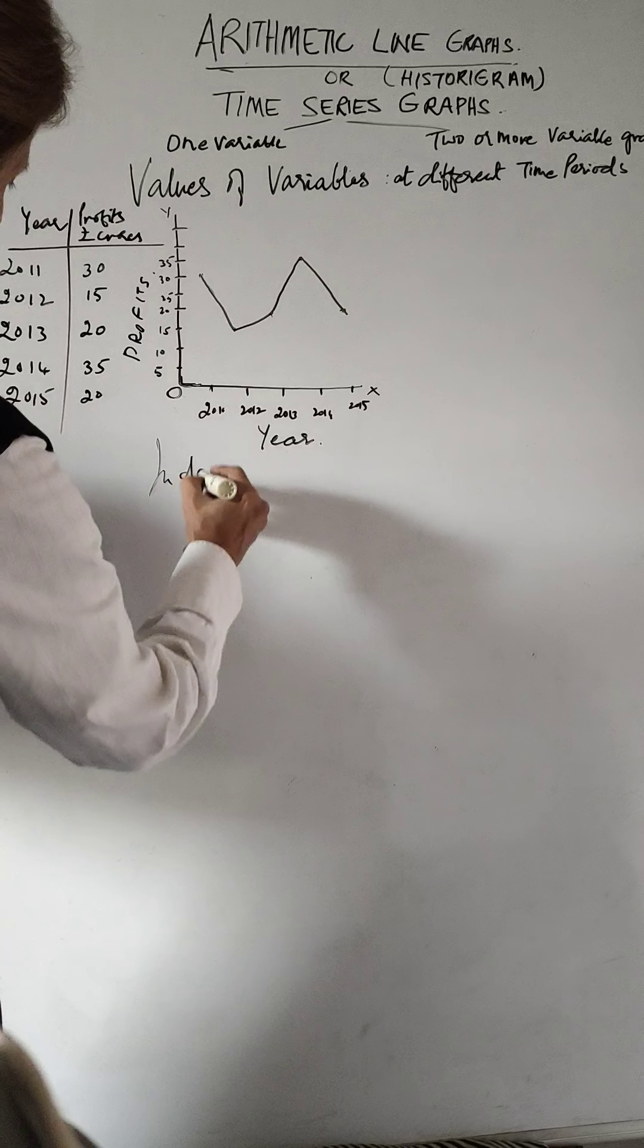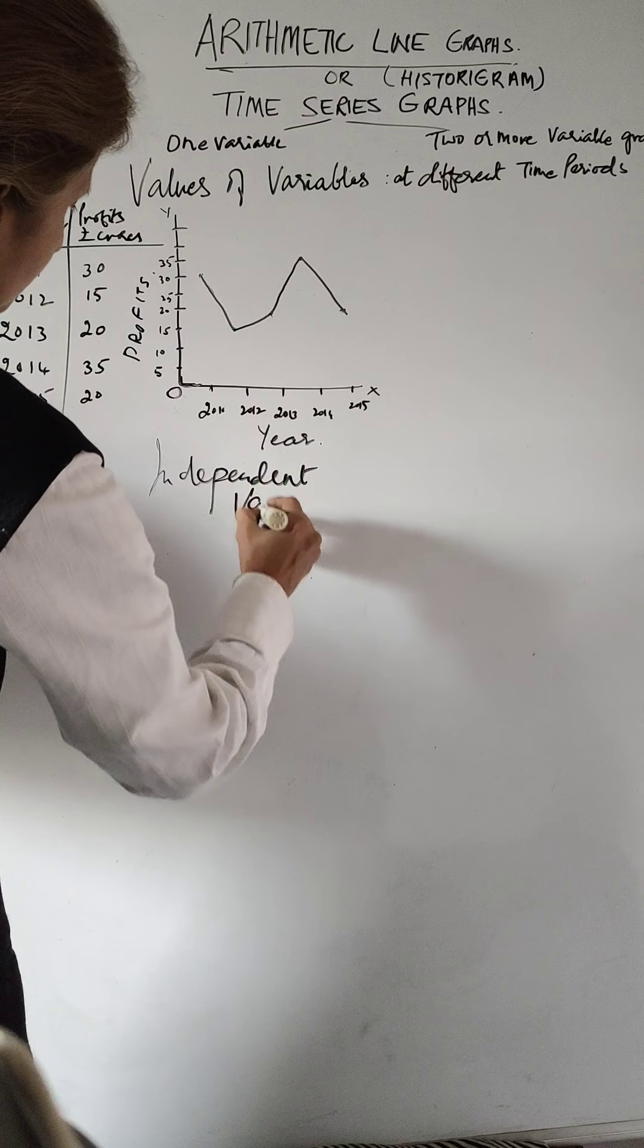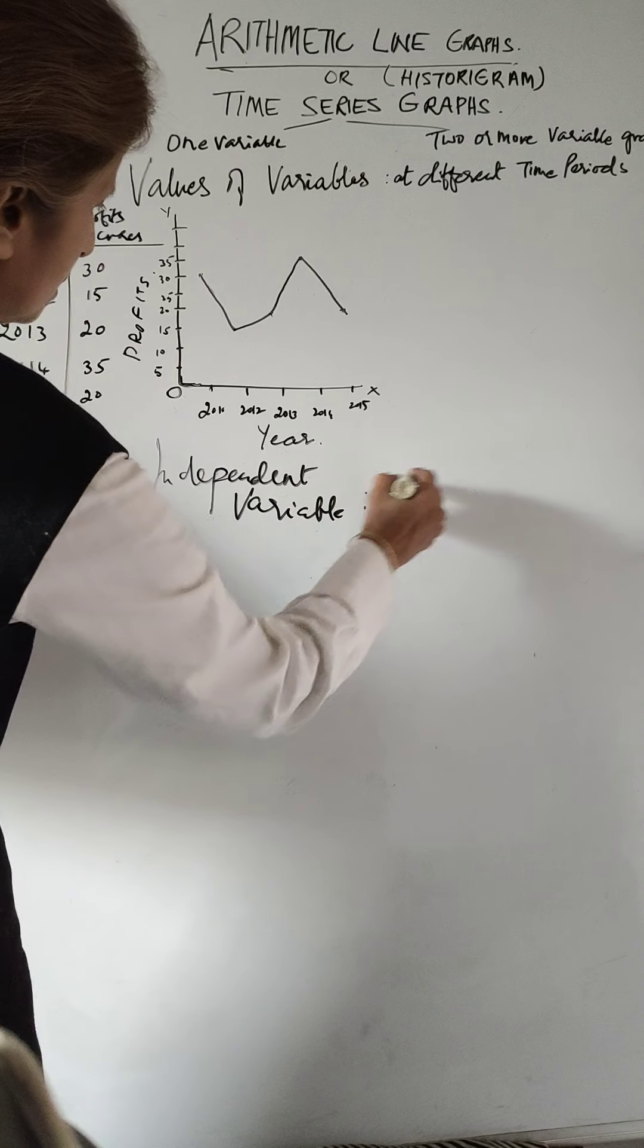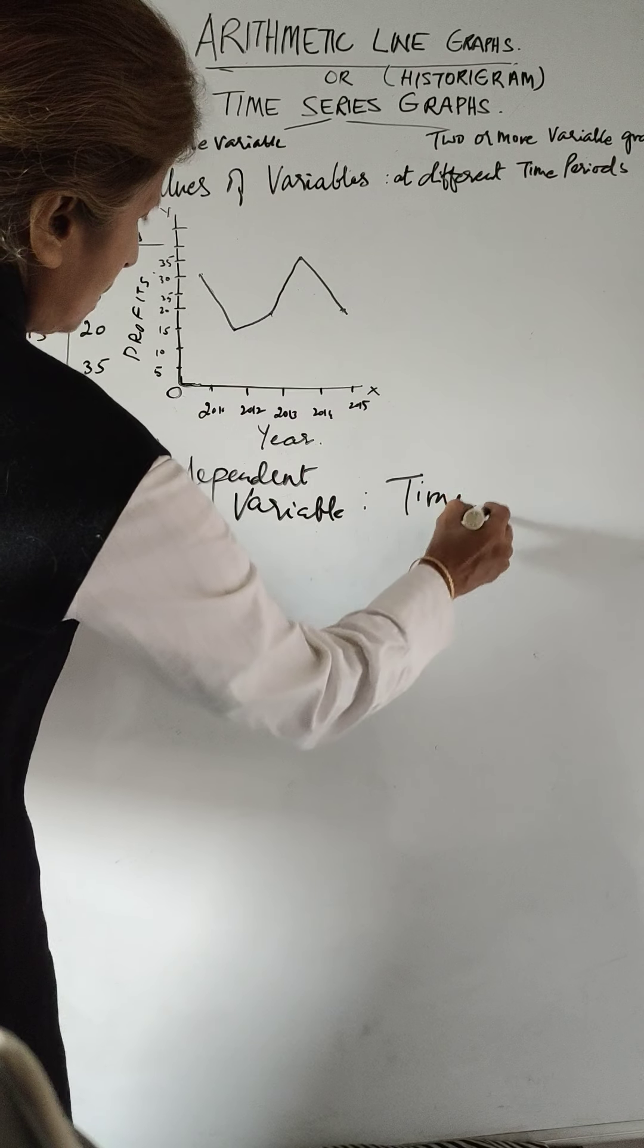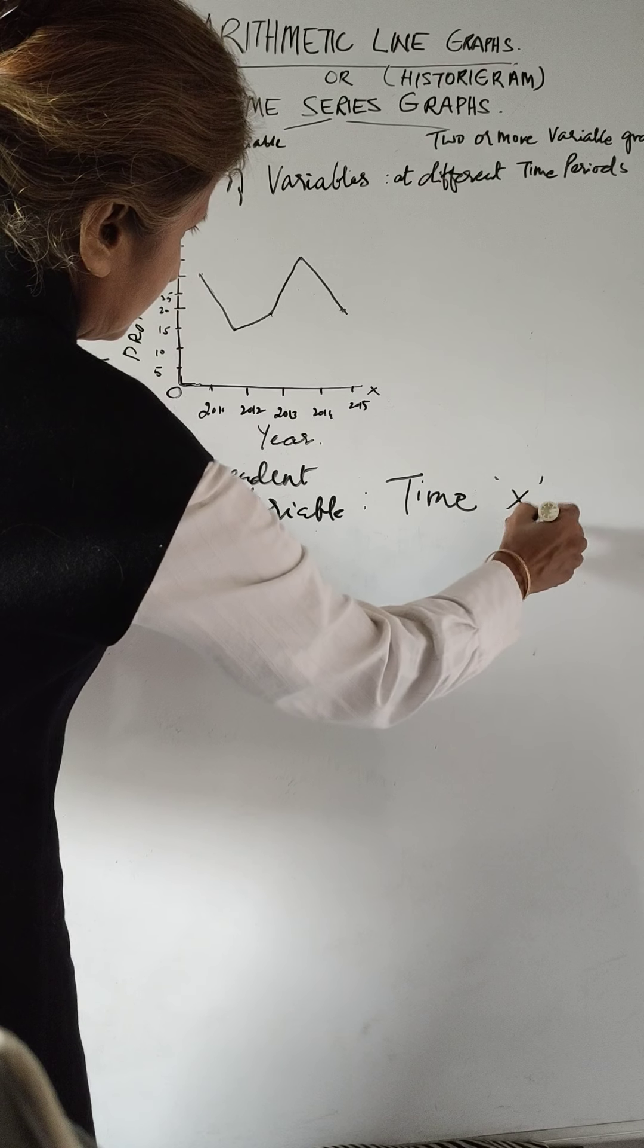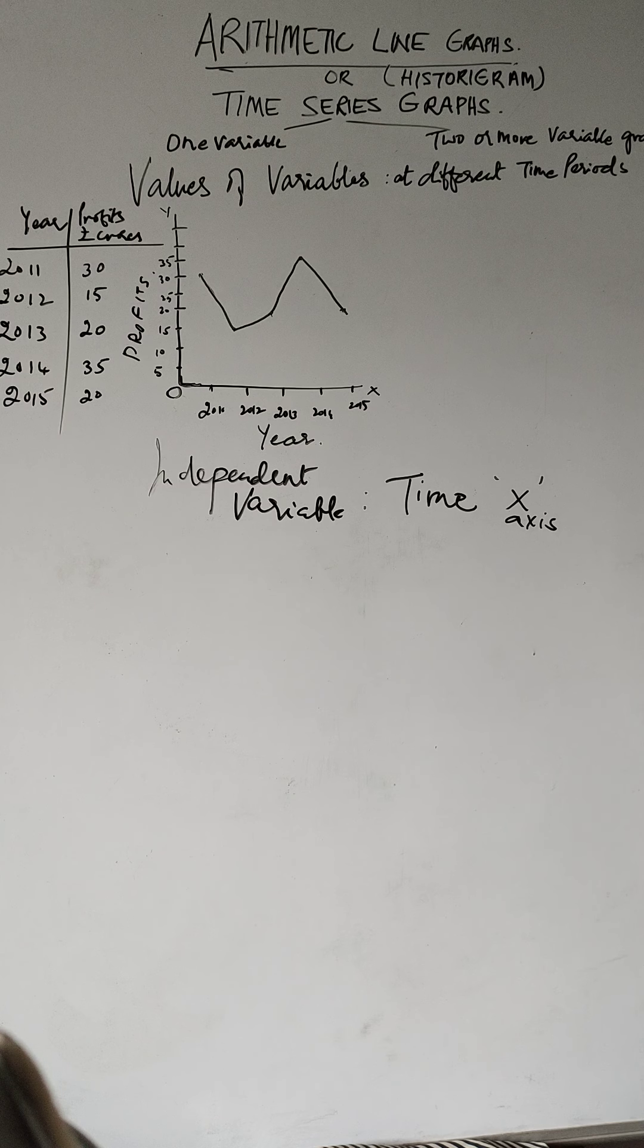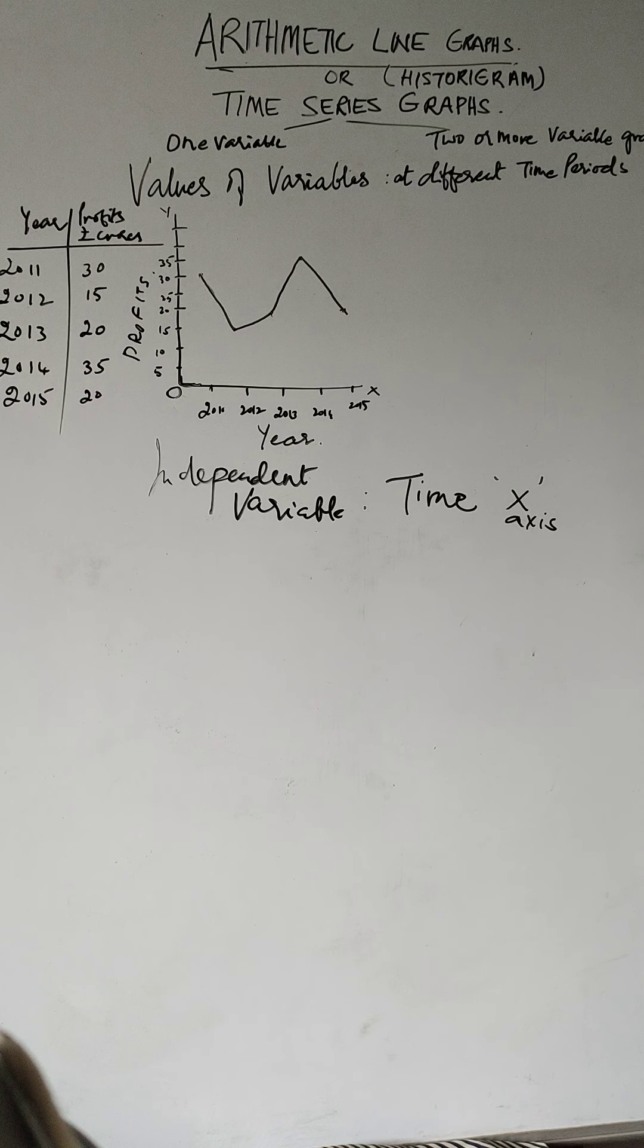The independent variable is time, and time is always taken on the x-axis. That is one general rule that you have to keep in mind. The independent variable, that is time, is taken along the x-axis.